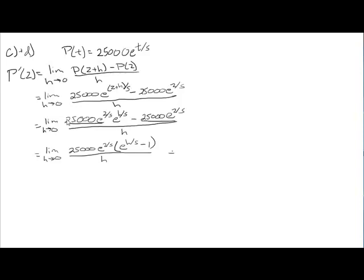Now, if we wanted to, we could actually go a step further. And because this does not depend on h, that could actually be rewritten out in front of the limit. So, 25,000 e to the 2 fifths. And then, the limit we need to evaluate to solve this is the limit as h goes to 0 of e to the h over 5 minus 1 all over h. This is really the part that needs solving. The rest is just a constant.